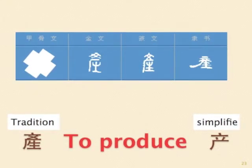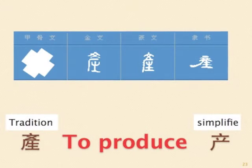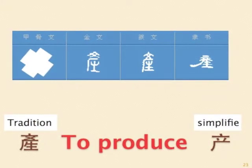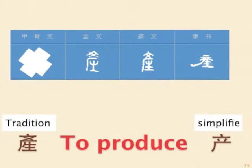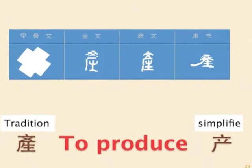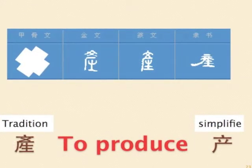Next word: to produce. The ancient word means a person using tools and past experience to produce crops. The bottom part looks just like growing crops. The simplified form only keeps the upper part.